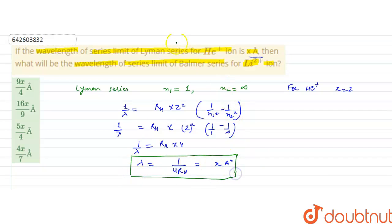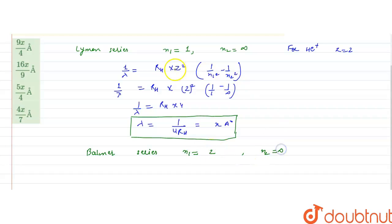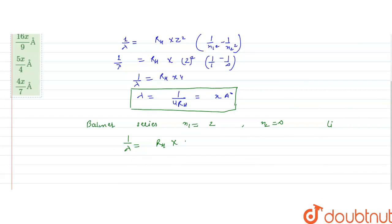Now we have to find the wavelength for the Balmer series of lithium 2 positive ion. The Balmer series occurs when the electronic transition in hydrogen atom or hydrogen-like species takes place from N1 equals 2, that is from the first excited state, to any other higher excited state. So for Balmer series, N1 equals 2 and N2 equals infinity. Applying the wavelength formula: 1 by lambda equals Rh into Z squared. For lithium 2 positive ion, Z equals 3 (the atomic number), into 1 upon N1 squared, that is 2 squared, minus 1 upon infinity squared.